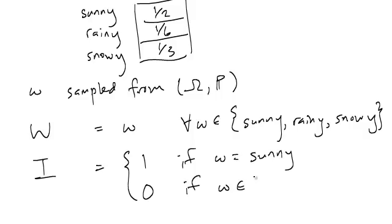So if omega was in the event rainy, snowy. In fact, for the first case, we can write that in terms of an event as well. We have omega within the set consisting of a single element, sunny.